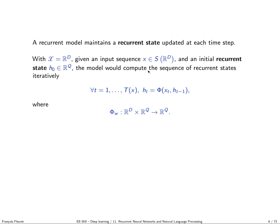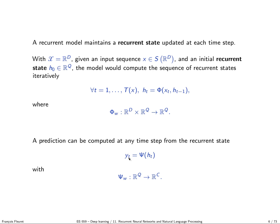Given an initial recurrent state H0, the model computes a sequence of recurrent states: starting with H0 and given X1 to XT, it produces H1 to HT. At any moment a prediction can be computed from the hidden state with another model: Yt equals Psi of Ht, where Psi maps from the recurrent state dimension into the prediction space.